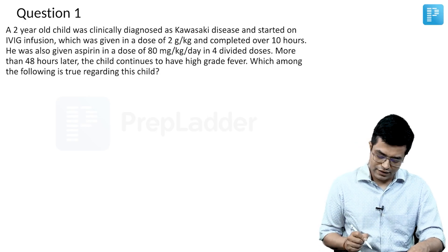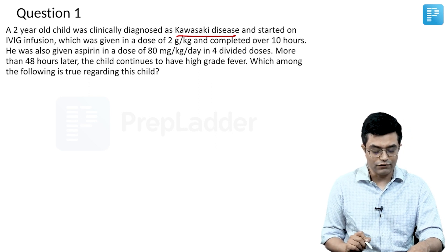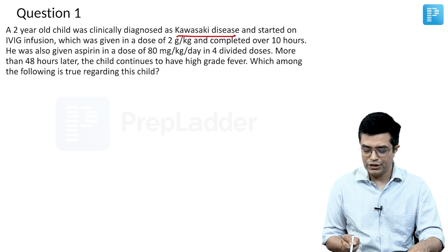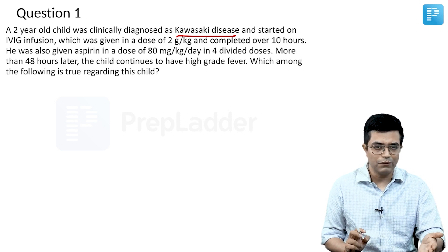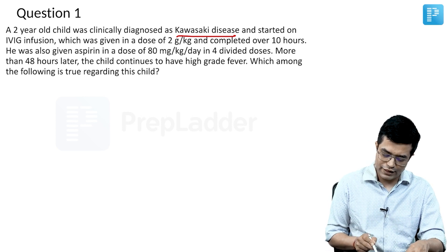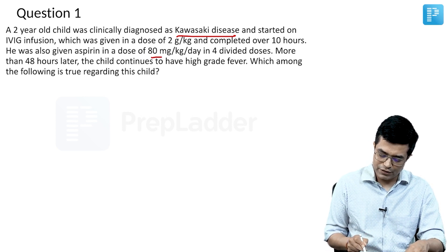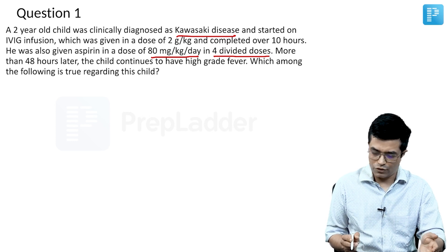A two-year-old child was clinically diagnosed with Kawasaki disease. The diagnosis was given and the child was started on IVIG infusion at a dose of 2 gram per kg, completed over 10 hours. IVIG is the drug of choice, given at 2 gram per kg as an infusion to be completed over 10 to 12 hours. The child was also given aspirin at a dose of 80 mg per kg per day in 4 divided doses, which is again optimum.